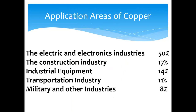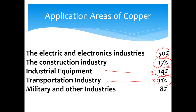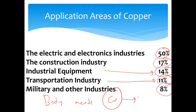Application areas of copper: the electrical and electronics industry uses 50%, the construction industry 70%, industrial equipment 14%, transportation industry 11%, and military and other industries 8%. So we need copper. By the way, the human body also needs copper, but if you exceed the required amount, it leads to poisoning.